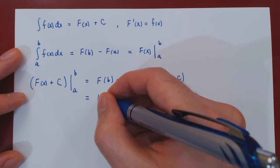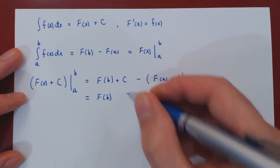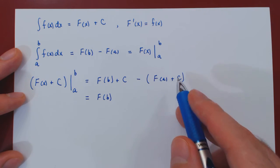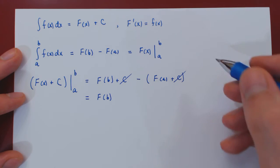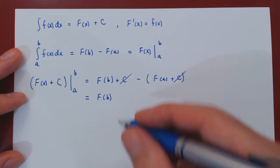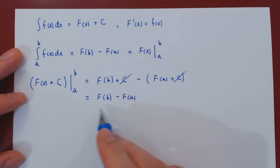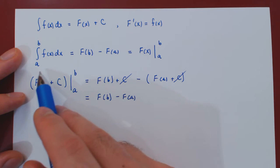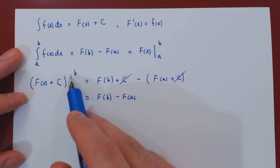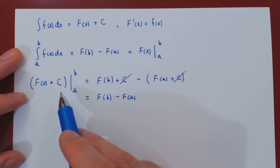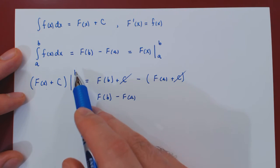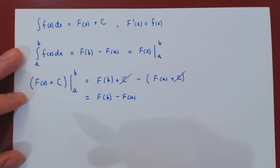And if we perform the subtraction, we get F of b, but then plus c minus c. So the c's cancel, and we're left with F of b minus F of a. So you see that we get the same result again. So it doesn't matter which antiderivative we use, as the constant will cancel from b to a, as the constant remains the same, whether x is b or x is a.